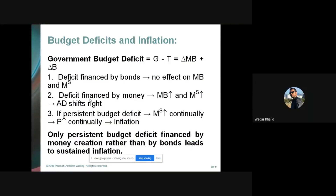Budget deficits and inflation: when an economy has a budget deficit, what policies can the government adopt to correct it? Just as individuals pay electricity, gas, and water bills, the government also has to pay its bills. A budget deficit occurs when government revenue is less than government expenditures.